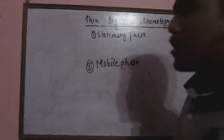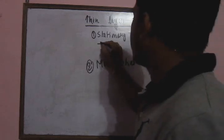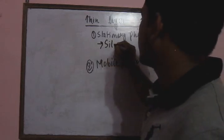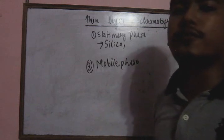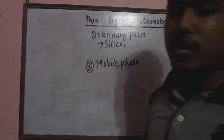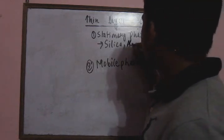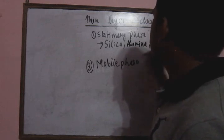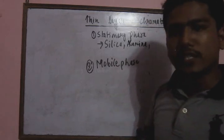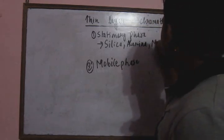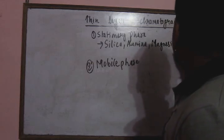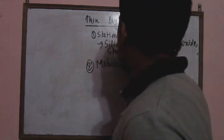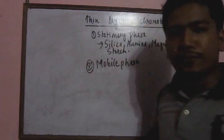The stationary phase consists of chemicals like silica, which is mainly used in thin layer chromatography. Alumina is also used as the stationary phase, as is magnesium oxide.